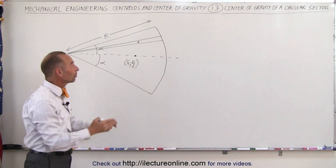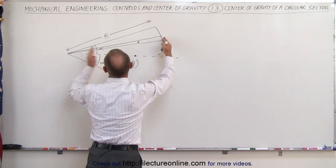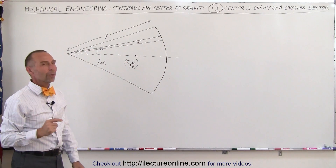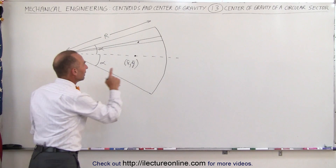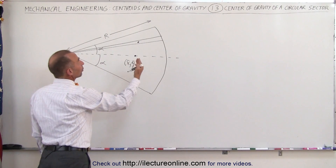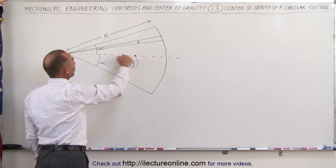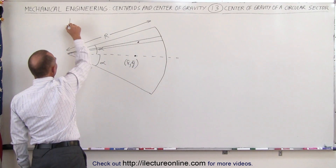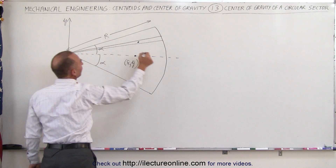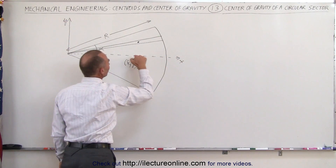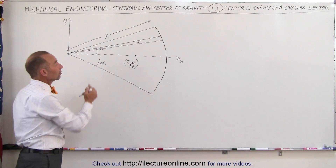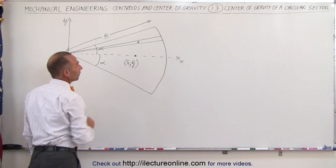Just assume that this is one-third the distance of this whole distance right there. Now how do we find the x and y coordinates of the center of mass? The y coordinate would be easy — we know that's going to be zero. If this is our y-axis and this here is our x-axis, you can see it's right on the x-axis, so the y coordinate is zero. We're only interested then in finding the x coordinate.